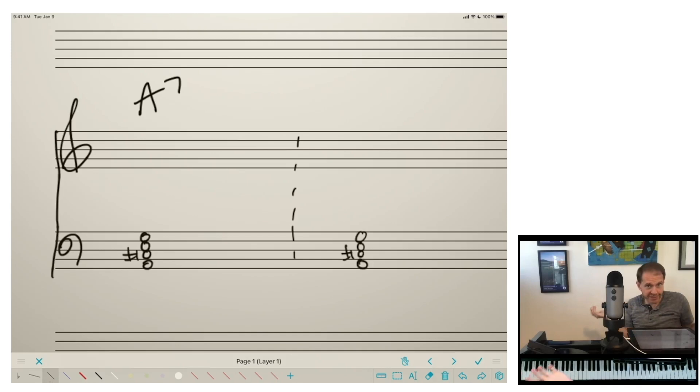Now, if we want to add up our extensions, if we're going from A7, if we're in the key of D major, fantastic. So our ninth is gonna be B natural, our 13th is gonna be F sharp. Where am I getting those notes? From the D major scale.